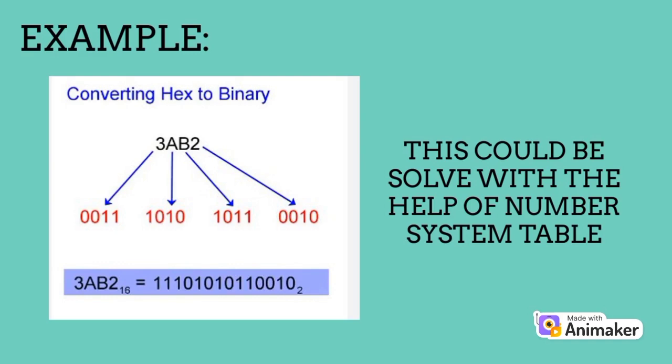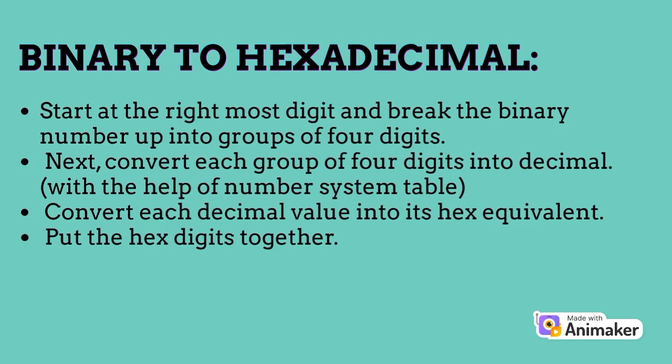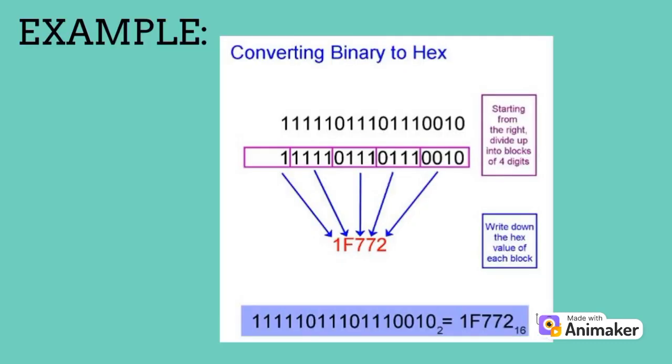This could be solved with the help of the number system table. Start at the rightmost digit and break the binary number up into groups of four digits. Next, convert each group of four digits into decimal with the help of the number system table. Convert each decimal value into its hexadecimal equivalent and put the hex digits together. Here is an example of converting binary into hex.